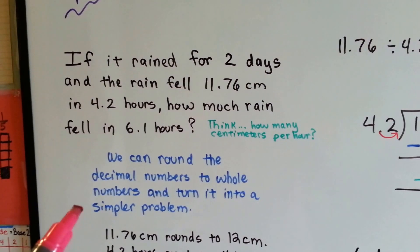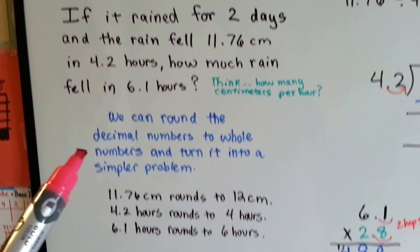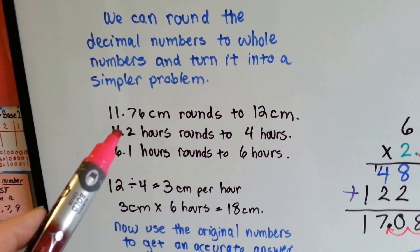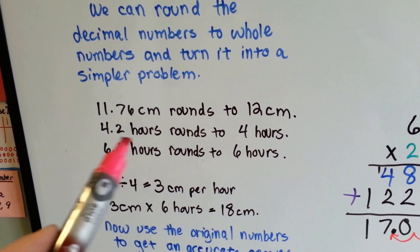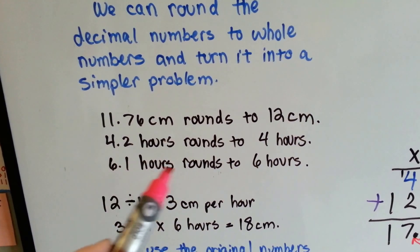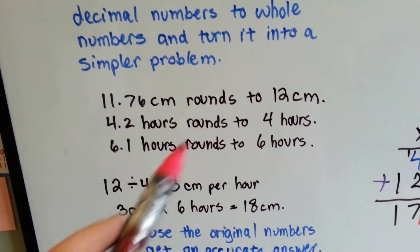We can round the decimal numbers to whole numbers and turn it into a simpler problem. The 11.76 cm rounds to 12, the 4.2 hours rounds to 4, and the 6.1 rounds to 6.